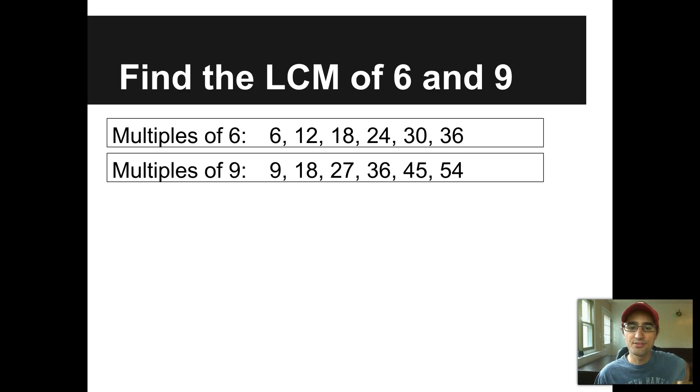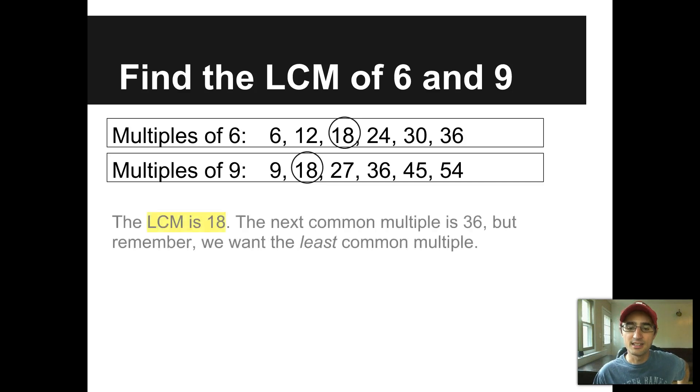The first number that I see in both places is the 18. That means the 18 is the least common multiple. I see something else in both places. What is it? Are you talking to your computer right now? That's weird. Anyway, it is 36. So the least common multiple is 18. The next common multiple is 36, but remember we want the least common multiple. After 36, we're going to see 54 in both places. Can you see a pattern in the common multiples? Now those common multiples will go on forever. Do you see the pattern? If you're clever, you'll note that the least common multiple is sort of the starting point, and then every other common multiple is a multiple of the LCM. In other words, 18 times 2 is 36, 18 times 3 is 54, and so on.